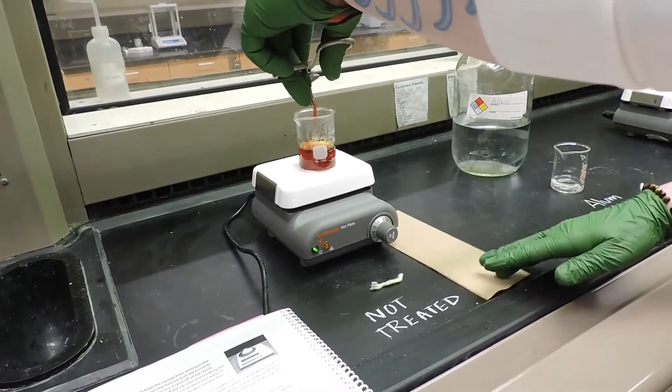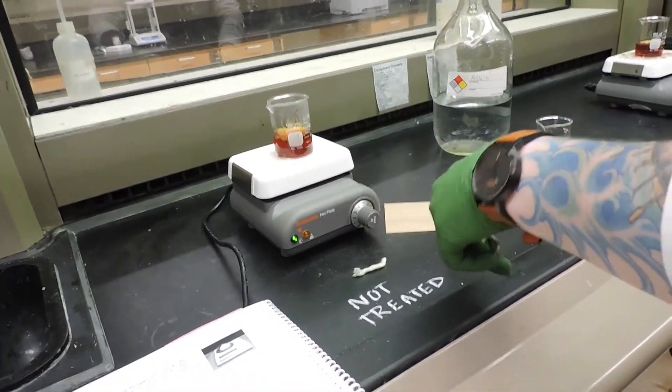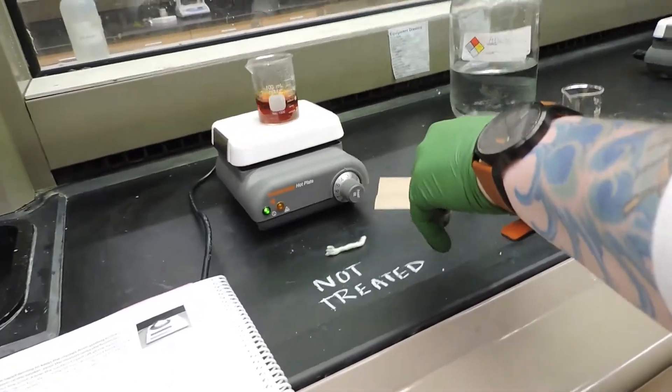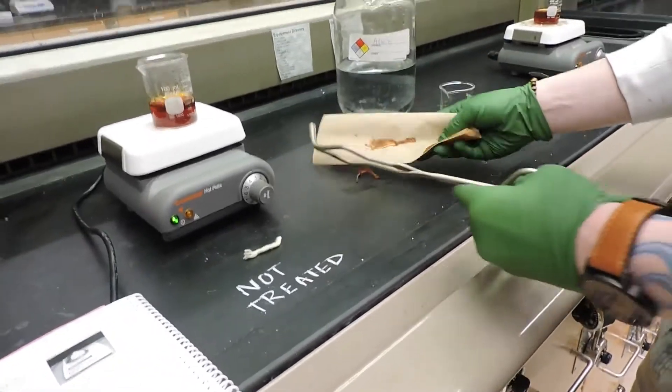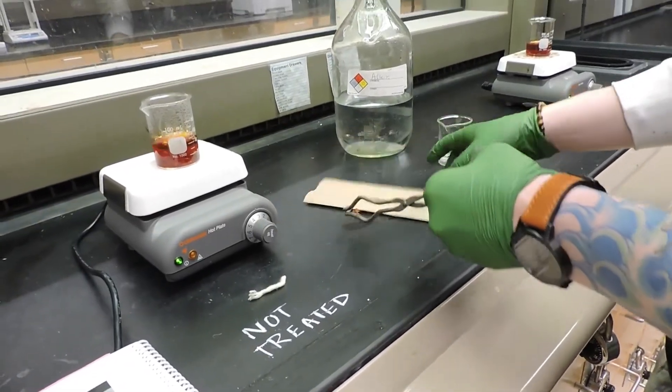So now that our piece of wool in the non-treated bath has been soaking for a minute or so, we're going to remove it from the bath and rinse it with some water and blot it with a paper towel.